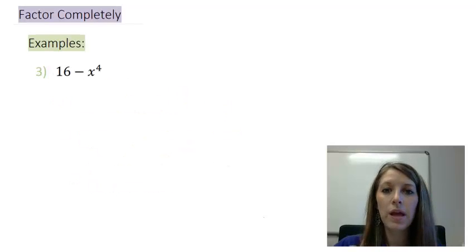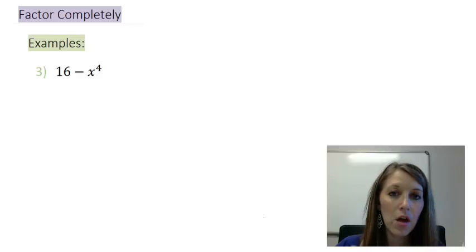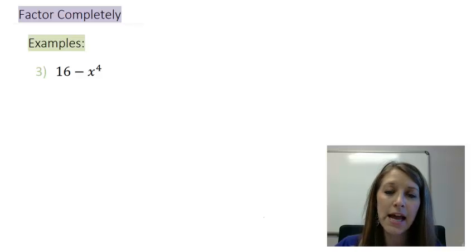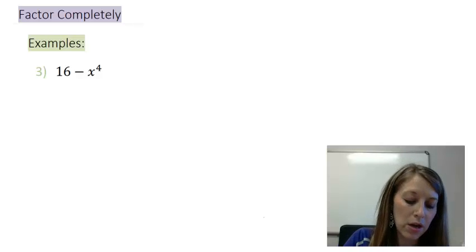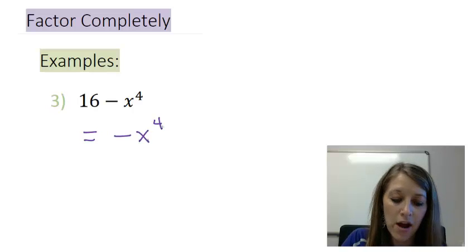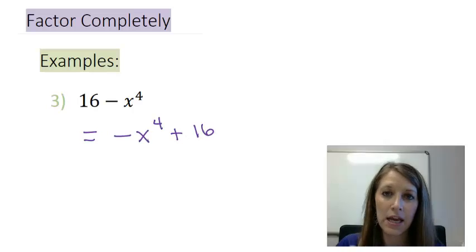Let's move on to example 3 which is my final example of factoring completely. Again I suggest you pause the video and do this on your own. So the first thing that I notice here is that this is not in typical order. This is really not in descending order where I have my highest exponent first and my constant term last. So what I want to do here is I want to rearrange this. I want to put my negative x to the fourth up front and my positive 16 in the end.